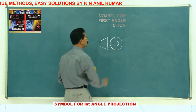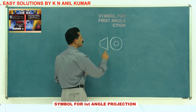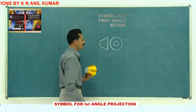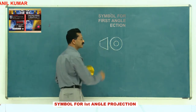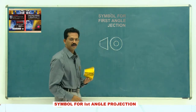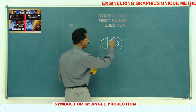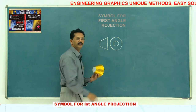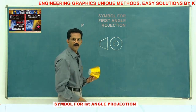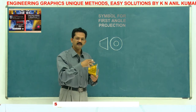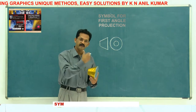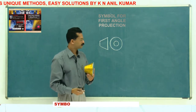So this is only the left side view. If the object is in the first octant, this left side view will get at the right side of the main front view. Now if the object is in the seventh octant...